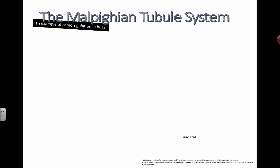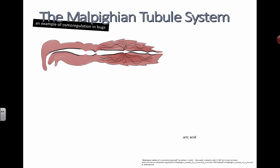So the Malpighian tubule system — we're going to look at it in detail as it relates to arthropods. Here's a side section through some kind of bug. You can see you've got the head, the thorax, and the abdomen. This is the general path that food takes going all the way out, and you can see these little tubules here called Malpighian tubules. Labels include: head, thorax, midgut, hindgut, and rectum — the last place where everything goes out.